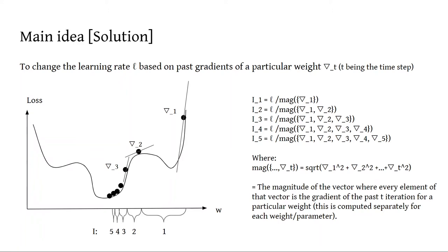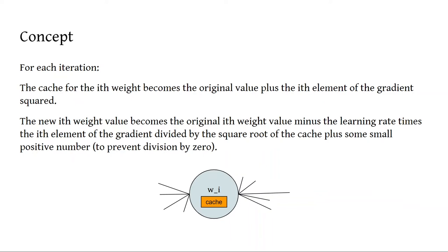We compute the magnitude by taking the square root of all of these elements squared and summing them up. So the concept behind this idea is that for each iteration, the cache value of the i-th weight, or i-th parameter, becomes the original value plus the i-th element of the gradient squared.